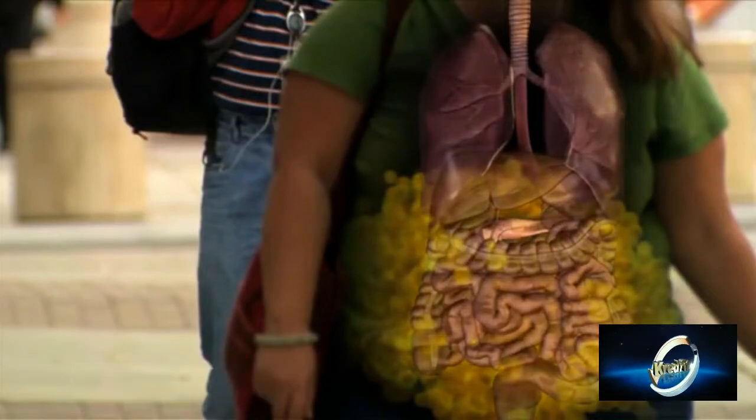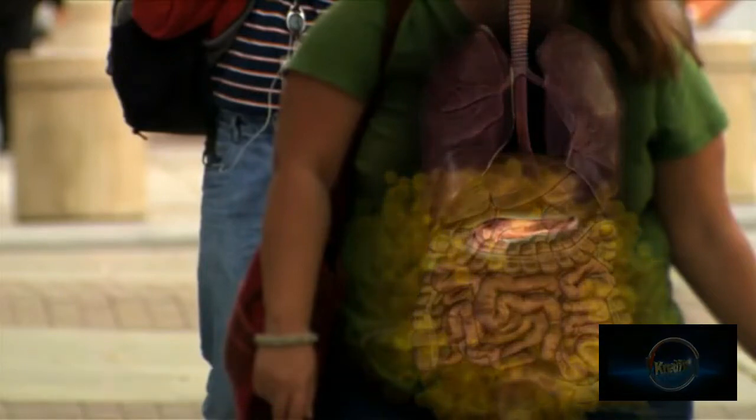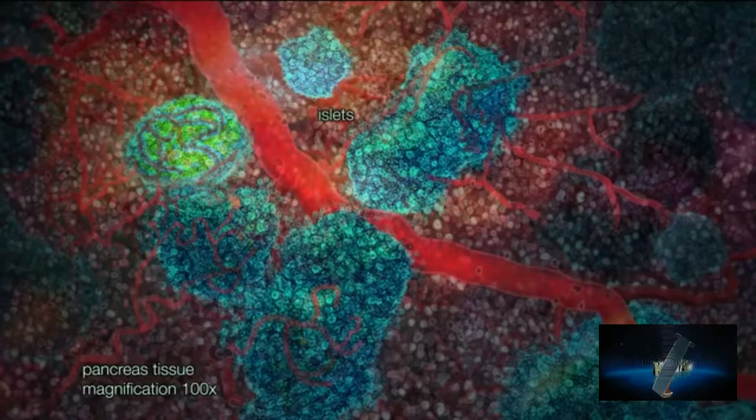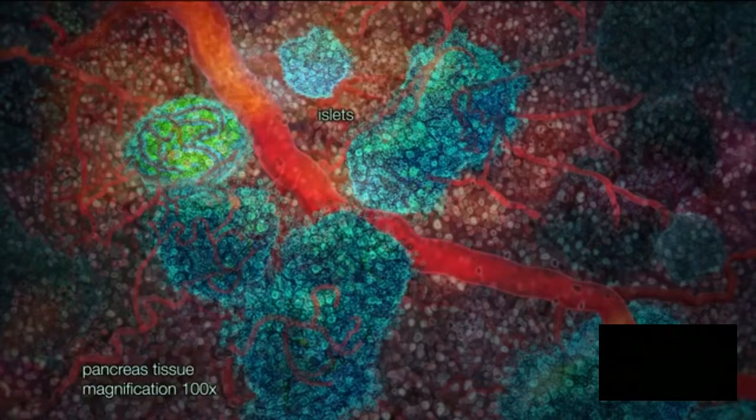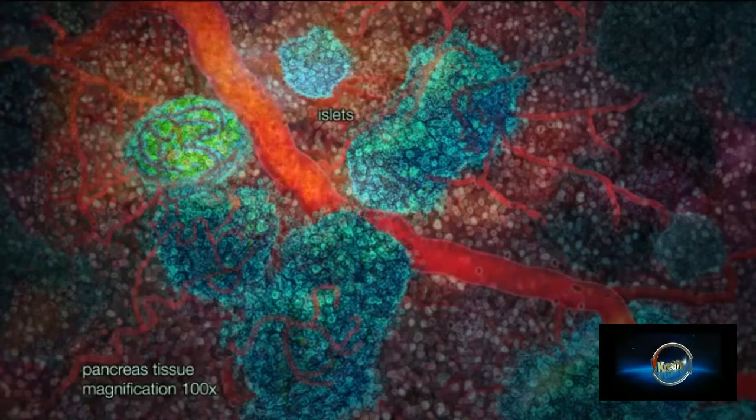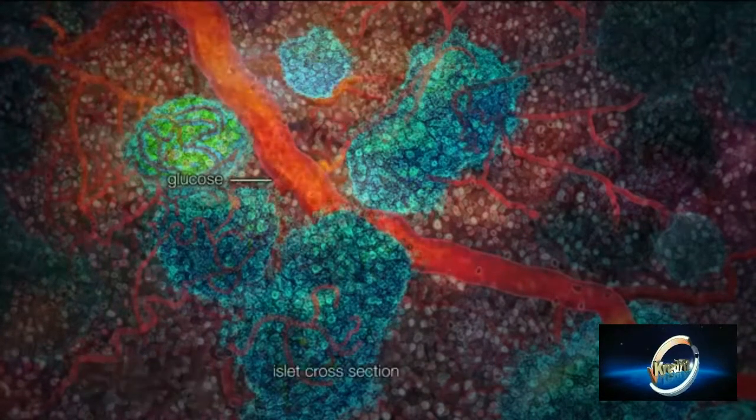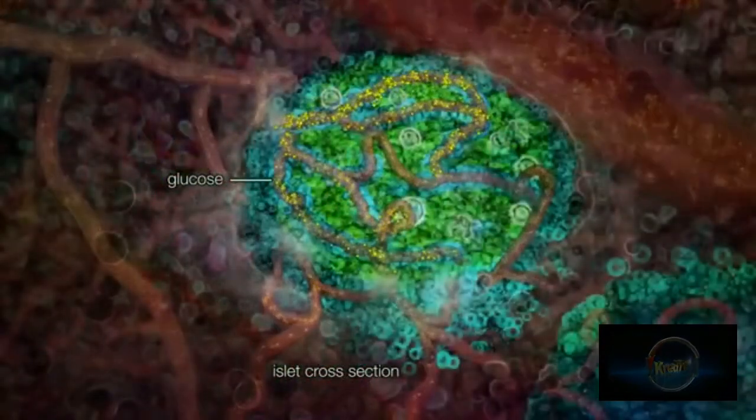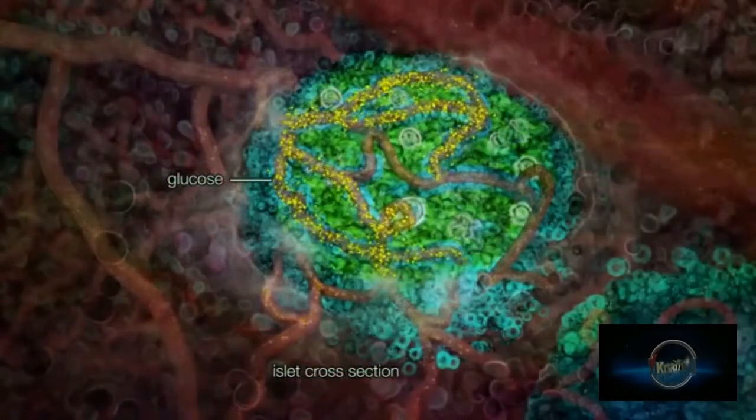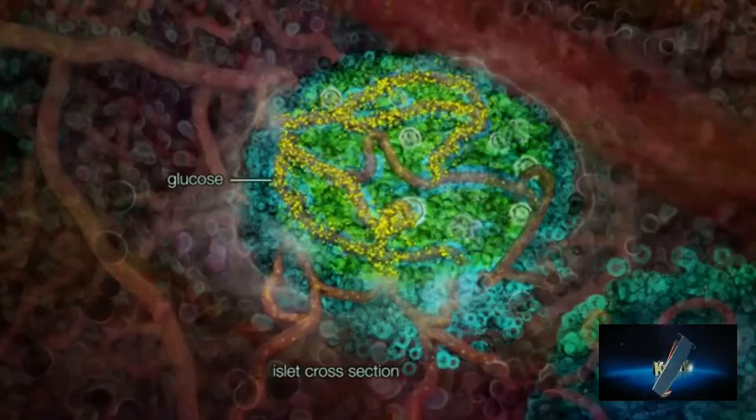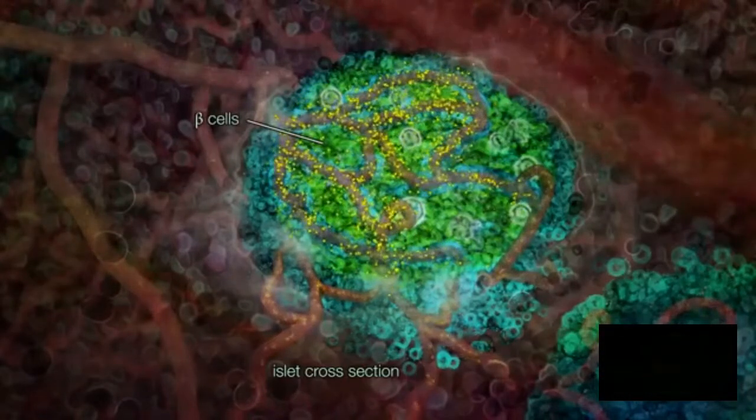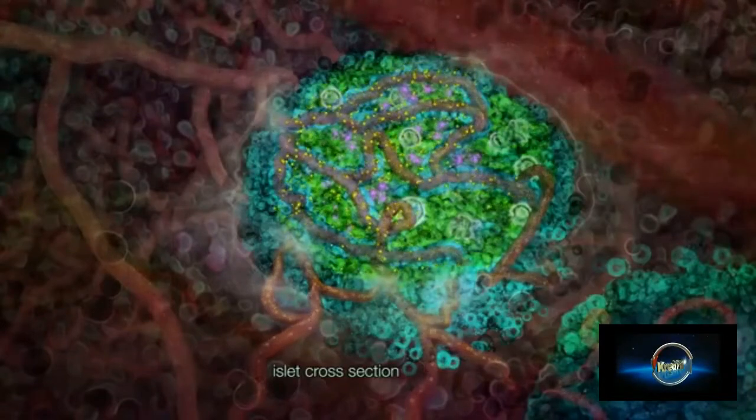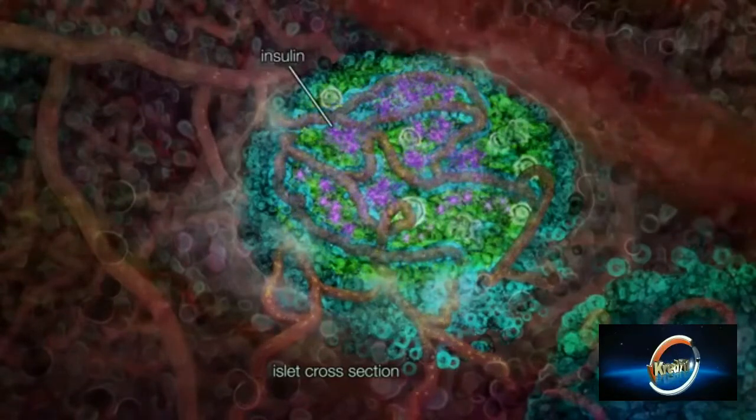The pancreas is an organ which produces hormones that control blood glucose levels. The hormones that control blood glucose are produced by clusters of cells in the pancreas called islets. Here glucose is shown arriving at the islets via the bloodstream. The glucose is taken up by cells in the islet called beta cells. The beta cells respond by producing the hormone insulin which lowers blood glucose.